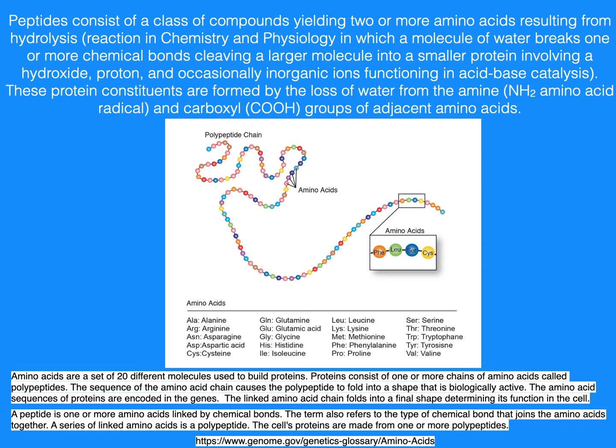Proteins consist of one or more chains of amino acids called polypeptides. The sequence of the amino acid chain causes the polypeptide to fold into a shape that is biologically active. The amino acid sequences of proteins are encoded in the genes. The linked amino acid chain folds into a final shape determining its function in the cell.